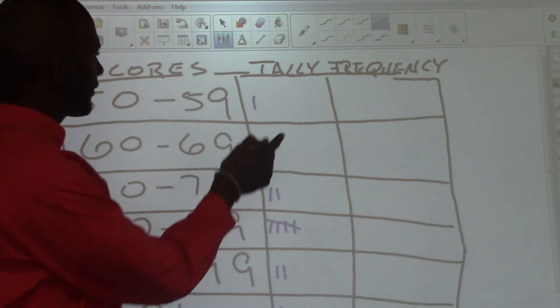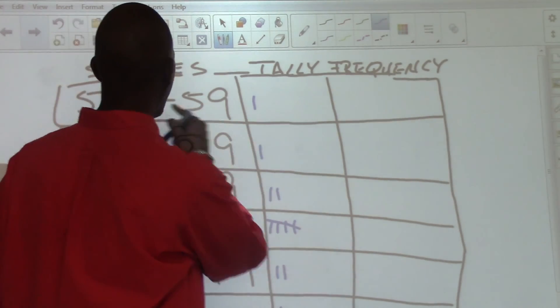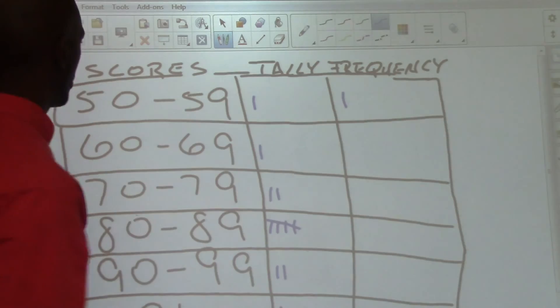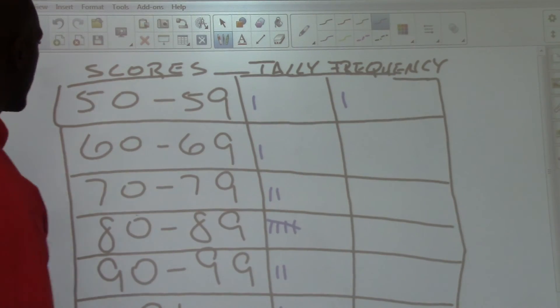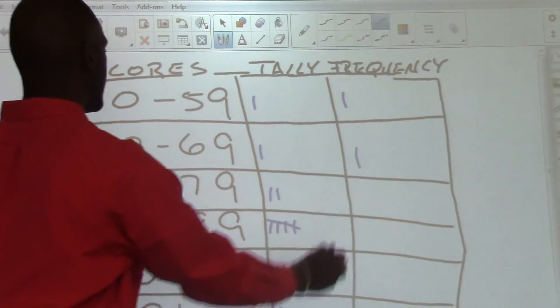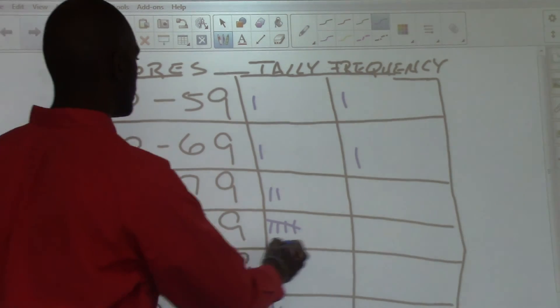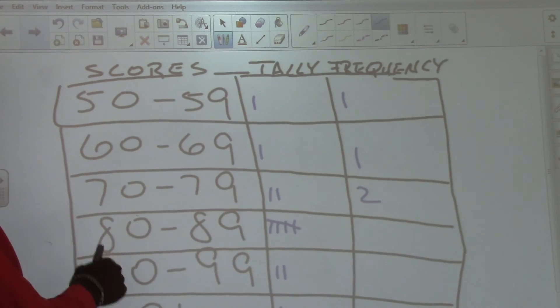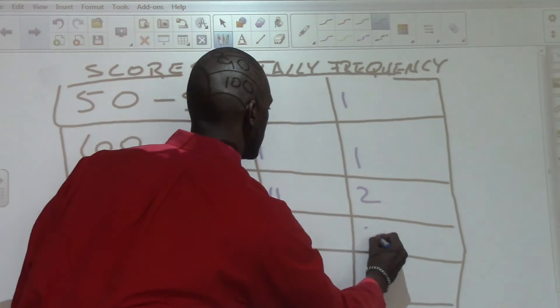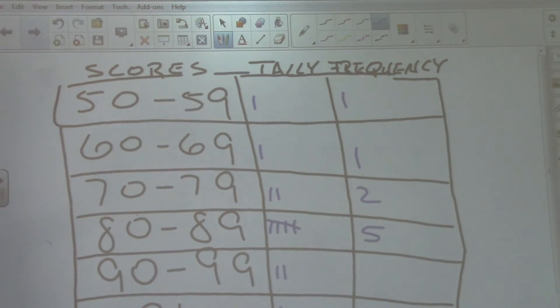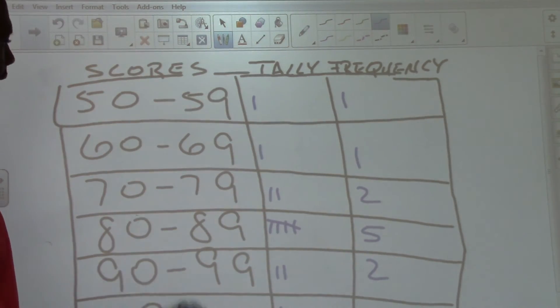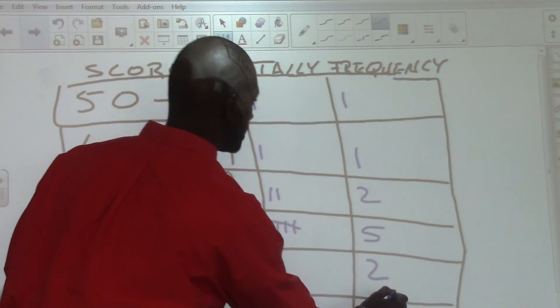We count the tally marks to find the frequency. We have a frequency of 1 from 50 to 59, a frequency of 1 from 60 to 69, a frequency of 2 from 70 to 79, a frequency of 5 from 80 to 89, a frequency of 2 from 90 to 99, and a frequency of 1 for 100.